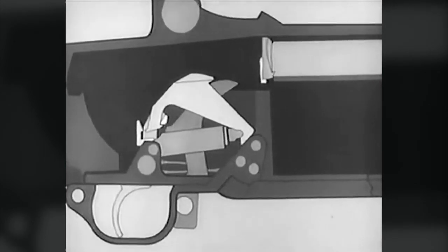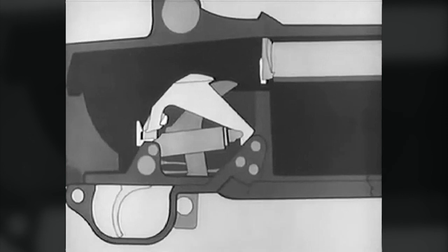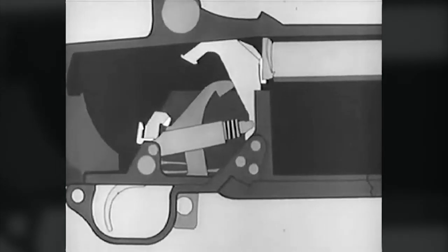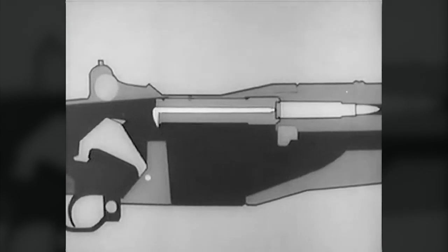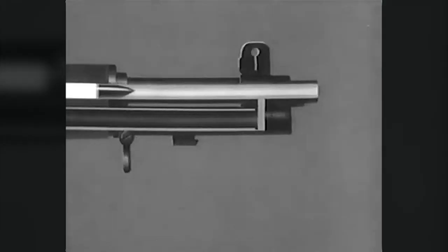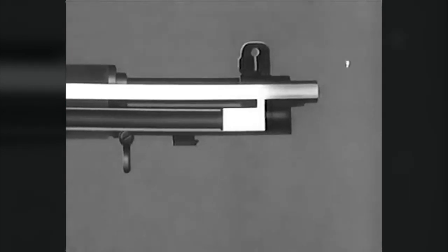The trigger is pulled. The trigger lug rotates and the hammer goes forward. The firing pin is struck and the cartridge fired. There goes the bullet. Part of the gases escape into the gas cylinder and drive the piston and operating rod back.